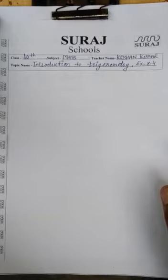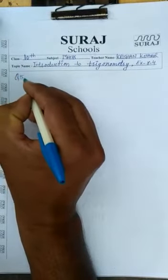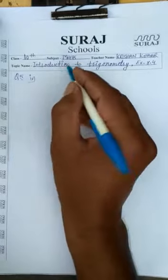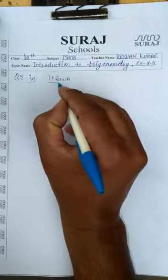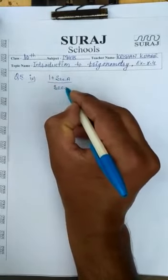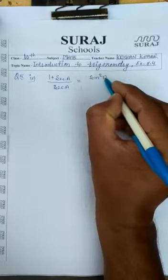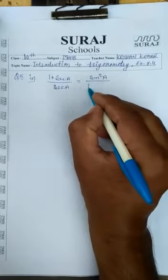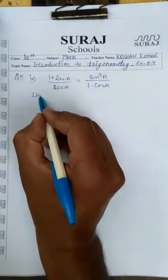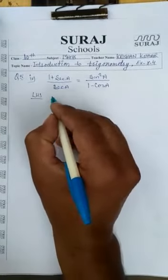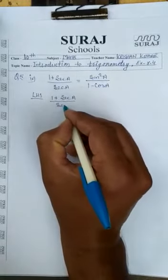Students, let's proceed with this exercise, Question 5, Part 4. Take LHS: 1 plus secant A upon secant A is equal to sin square A upon 1 minus cos A.